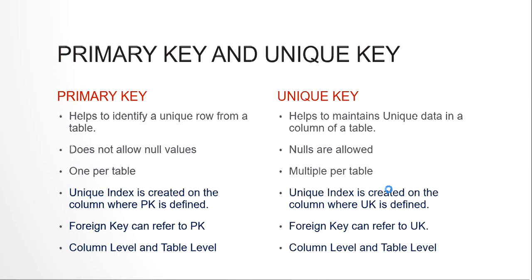That is the use of primary key — it helps you to identify a unique row from your table. A unique key is something different. Say in your same employees table you have a column such as phone number or email ID. We always want the phone numbers not to repeat between different employees, so we give a unique key constraint on that, meaning the phone number or email ID is never repeated. So we make them unique — those are individual unique keys. It helps us to maintain unique data in a column.